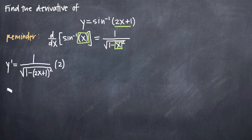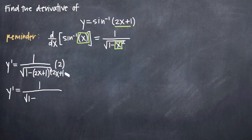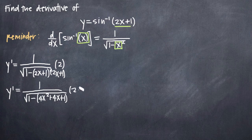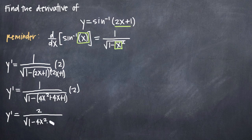Now it's just a matter of simplification. We'll simplify what's under the square root: 1 minus 2x plus 1 times 2x plus 1. Multiplying that out gives 4x squared plus 4x plus 1, all underneath the square root, and we still have this multiplied by 2. Bringing the 2 into our numerator, under the square root we distribute the negative sign to get 1 minus 4x squared minus 4x minus 1.